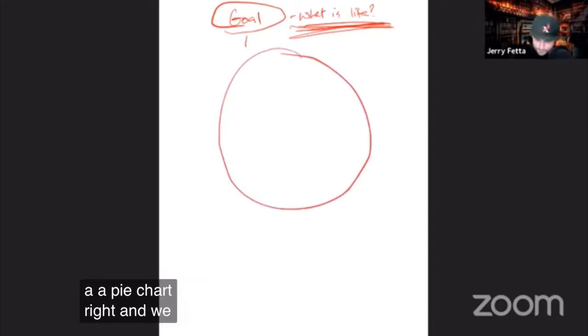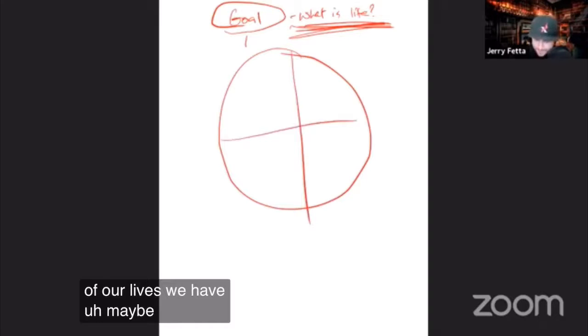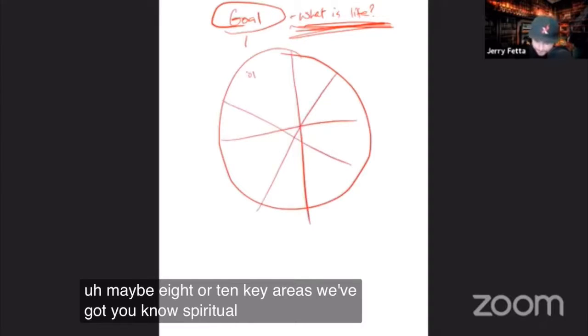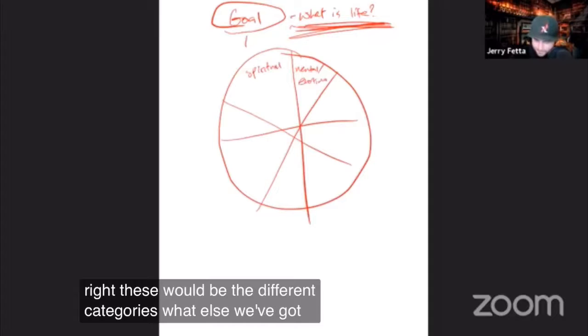We have maybe eight or ten key areas. We've got spiritual, we've got mental and emotional—these would be the different categories. We've got physical.